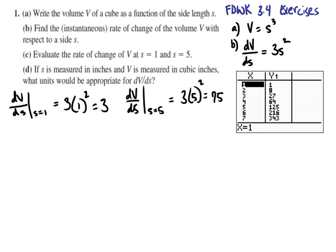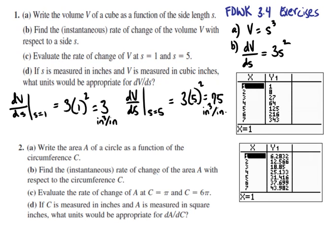Finally, if S is measured in inches and V is measured in cubic inches, what units would be appropriate for dV/dS? That would be inches cubed per inch. There would be a 3 cubic inch change in the volume of the cube expected when the length of the side increases by 1 inch. So it's 3 inches cubed per inch.